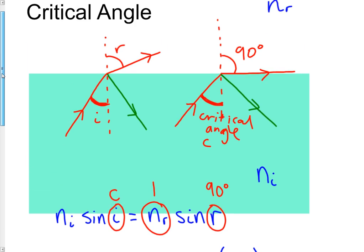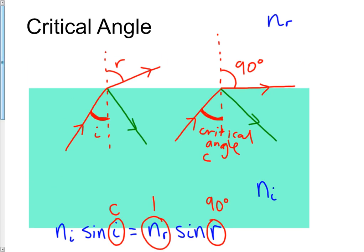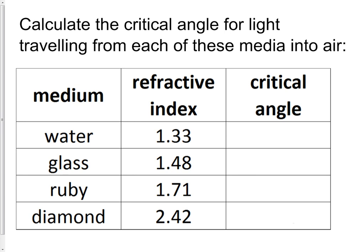What I'd like you to do is a quick check that you're happy with that. On this screen here, I've got four different media: water, glass, ruby, and diamond. We've got light that's inside each of these media being directed at the boundary between those media and air. For all of them, you can just use that simple formula. Pause the video and calculate the critical angle for each of these. Copy the table out, calculate the critical angle for each, and then I'll reveal them in just a second.